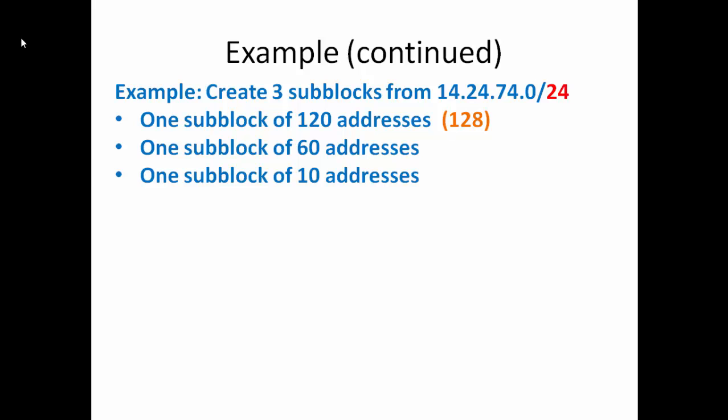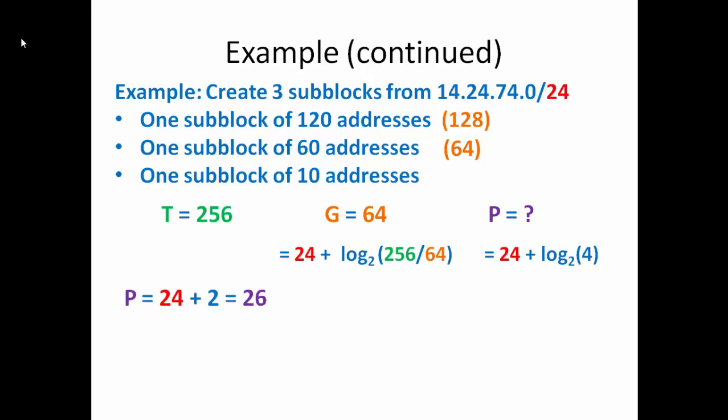Let's do that again. Only now we will divide up a subblock of 60 addresses. 64. Where do we get that from? Well, 60 is not a power of 2. So we have to go to the power of 2 that is closest to 60 but still more than 60, still greater than 60. So that is 64. Again, we'll figure out our prefix. And we'll say our prefix is 24, that's from our original address, plus log 2 of 4. And that is going to give us 24 plus 2, which is 26.